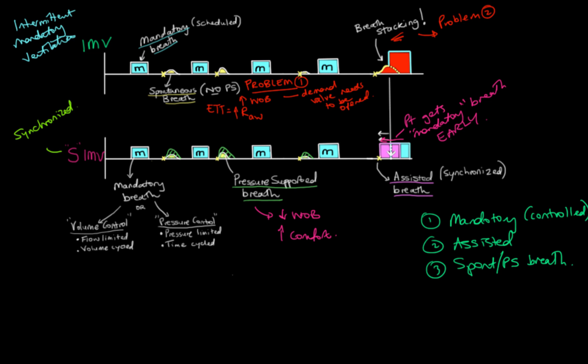So what that sort of leads to is this was referred to as sort of partial ventilatory support. What we used to do with IMV is we'd drop the rate of these mandatory breaths down so they came in less frequently and then allowed the patient to breathe spontaneously in between. And the weaning process was just reducing the frequency of these mandatory breaths. SIMV is used in a similar way. We reduced the frequency of these mandatory breaths, allowing them to breathe with pressure support more. But it's definitely an improvement from IMV.